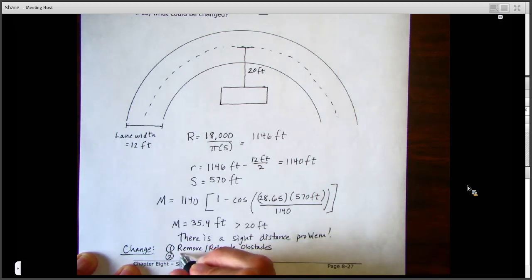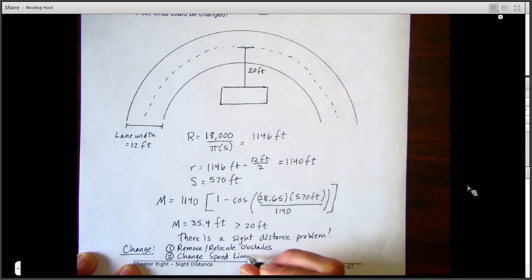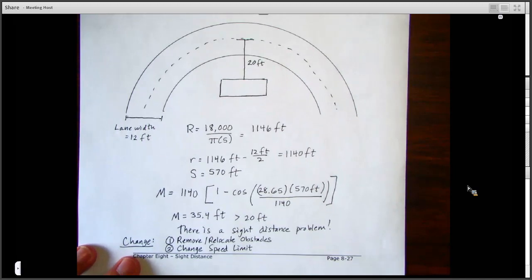We have removing or relocating obstacles if possible. We also have the option sometimes to change the speed limit, so we can change that design speed, which is going to change our stopping sight distance. And if you go through the math for that, you could try, say, a V of 40 miles per hour, which would give you an S, a stopping sight distance of 305 feet, which would then give you an M of 10.2 feet.